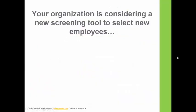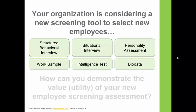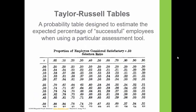Let's say your company is considering using a new screening tool — an assessment. It could be a personality assessment, an intelligence test, or a structured behavioral interview. There are many types of assessments beyond the traditional interview that you can use to improve the quality of your hiring decisions. The question is: how can you demonstrate the value or the utility of your new assessment? That's what Taylor Russell tables will help you answer.